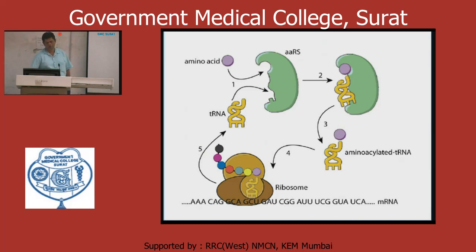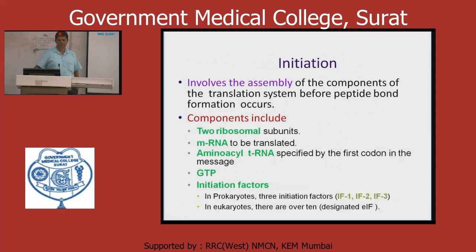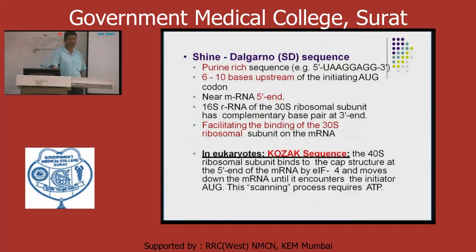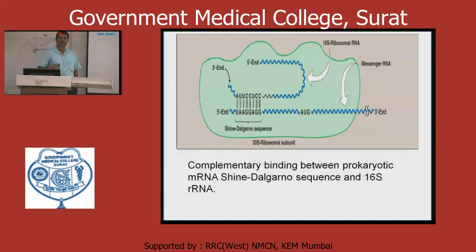Now this is the initiation. Initiation includes the two ribosome subunits, mRNA, and aminoacyl-tRNA carrying the particular amino acid in parallel to it. GTP catalyzes the activity. There are initiation factors, but do not concentrate on those now. The Shine-Dalgarno sequence is important — like the TATA box in transcription. Concentrate first on AUG, which is the start codon.